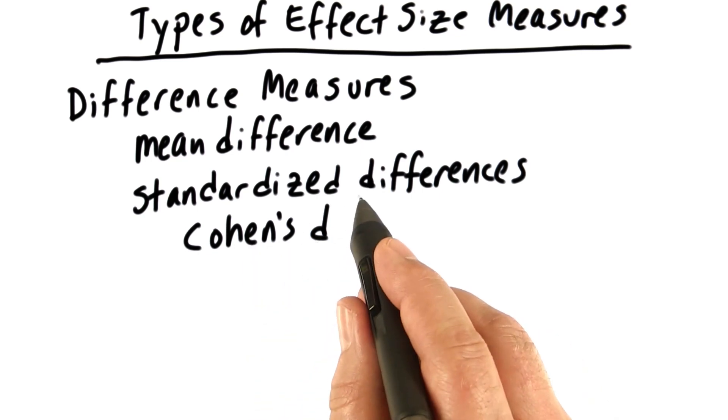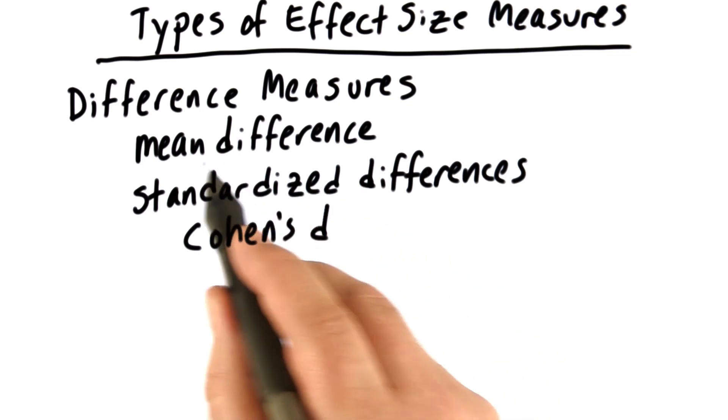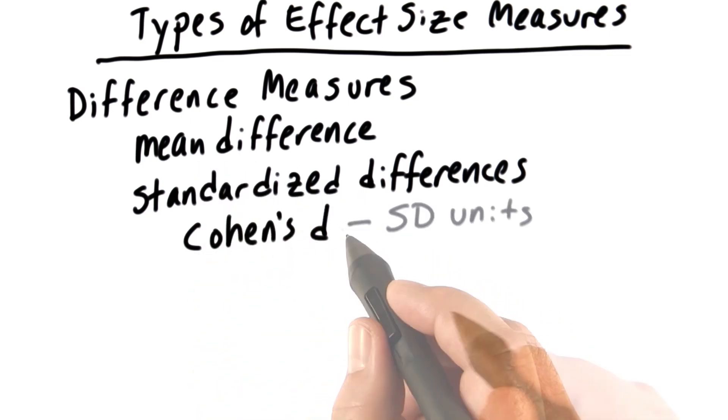Notice that Cohen's D, as the standardized difference measure, actually tells us about the mean difference. It does so in standard deviation units.